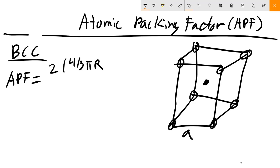Times four-thirds pi R cubed. Same thing here: the volume of our cell is going to be a cubed, but we want that in terms of R. For a BCC, it's going to be 4R over root 3.